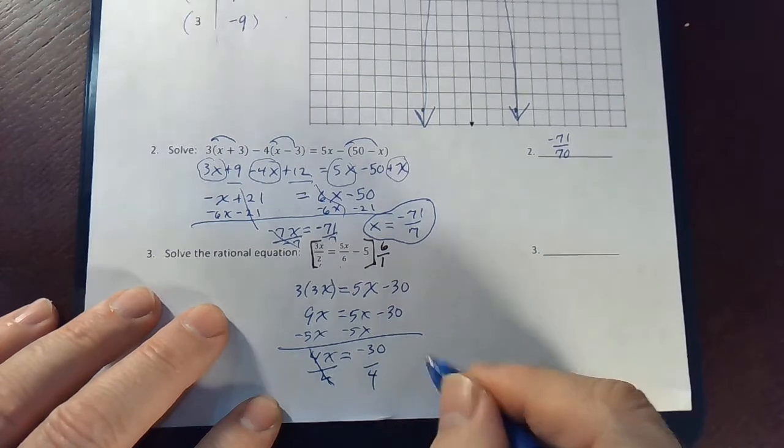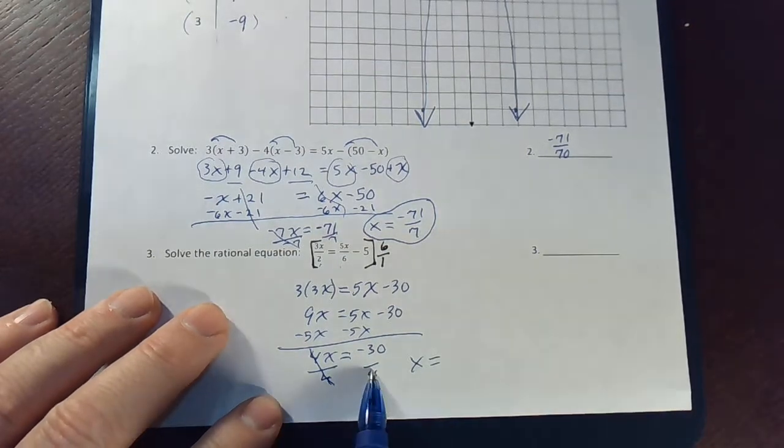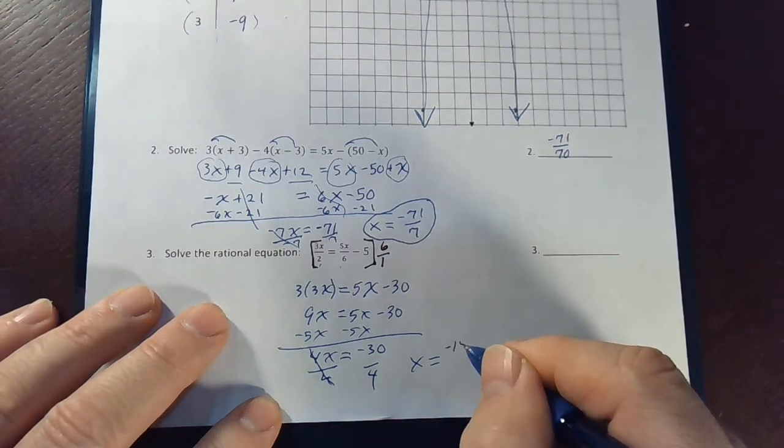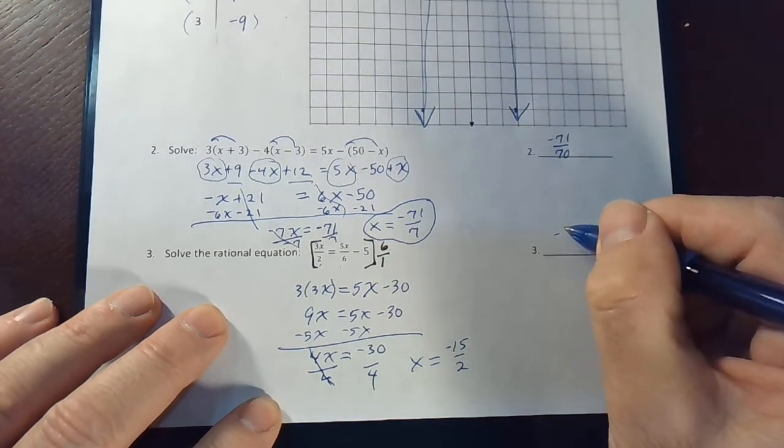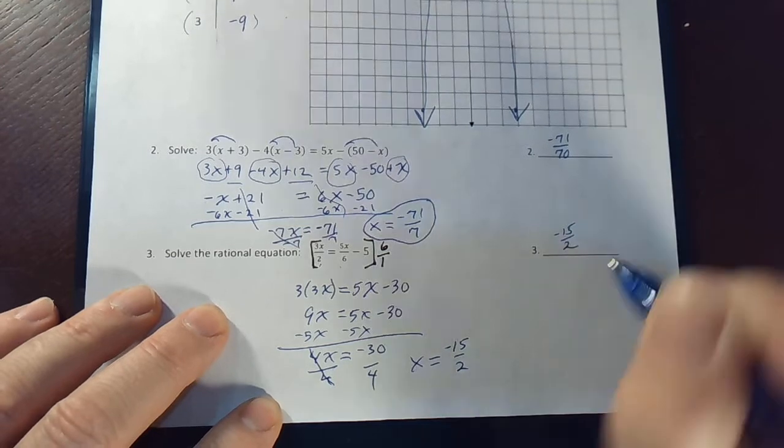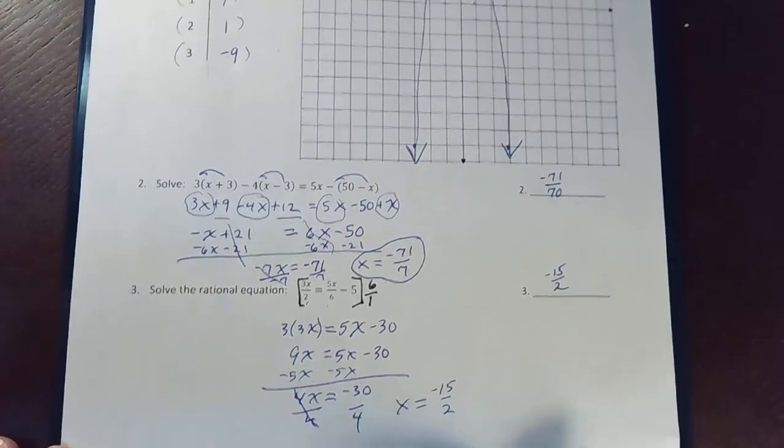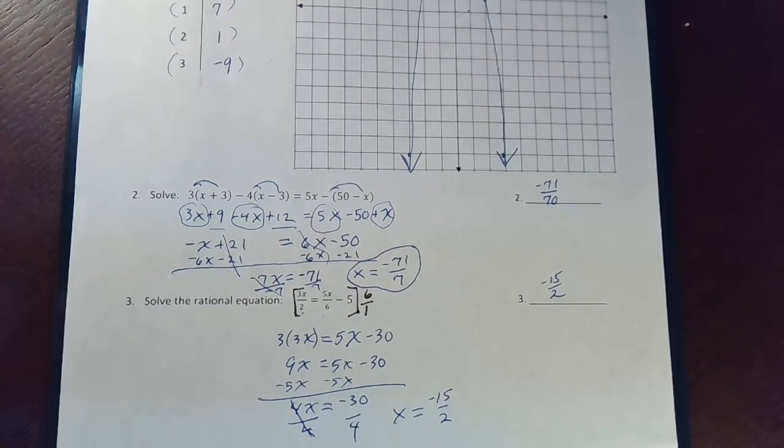And that means that x is equal to—let's see, this can be reduced a little bit. Negative 30 over 4 could be negative 15 over 2. All right, that's the first page of the exam.